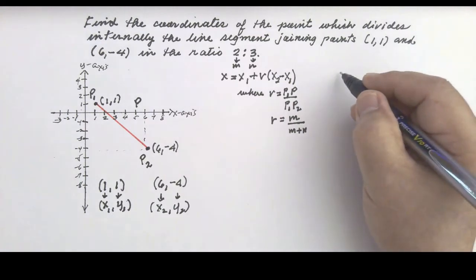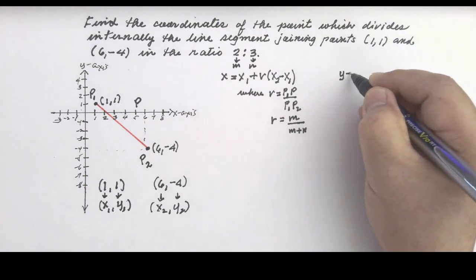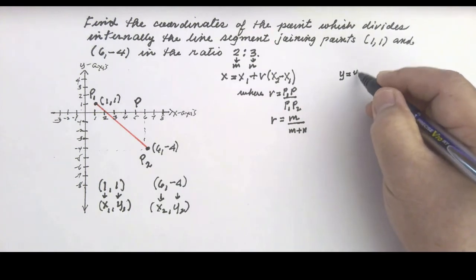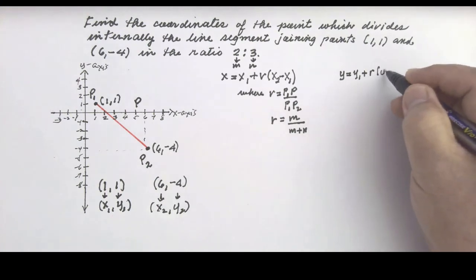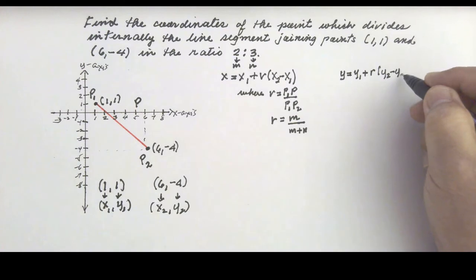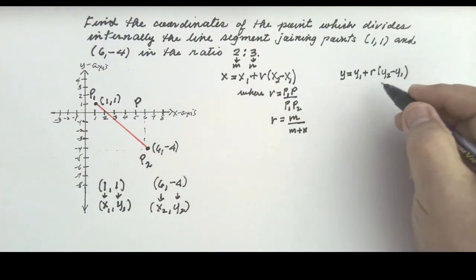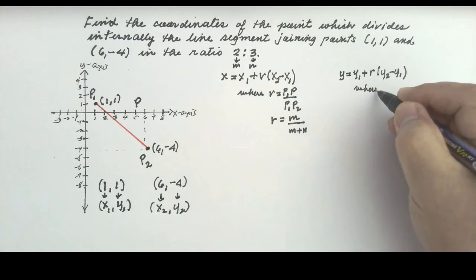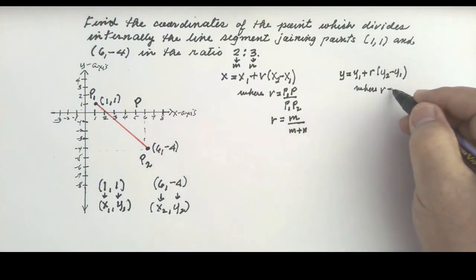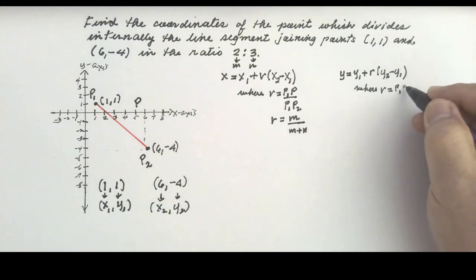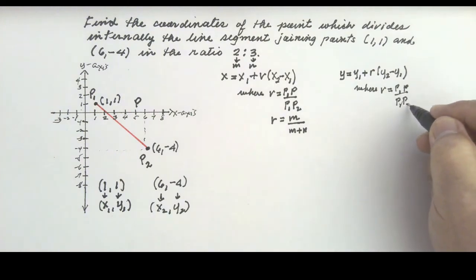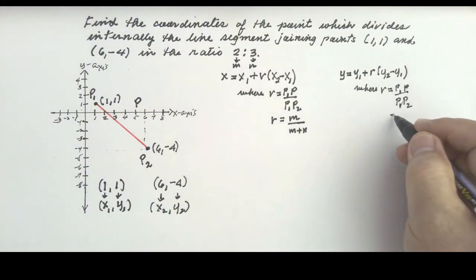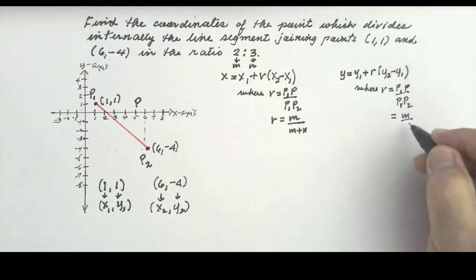And for the y-coordinate, y is equal to y₁ plus R times (y₂ minus y₁), where R equals P₁P over P₁P₂, which equals M over M plus N.